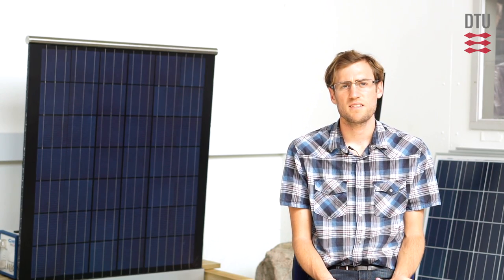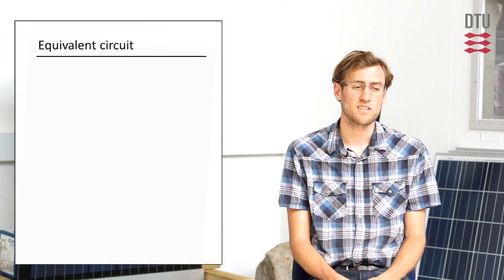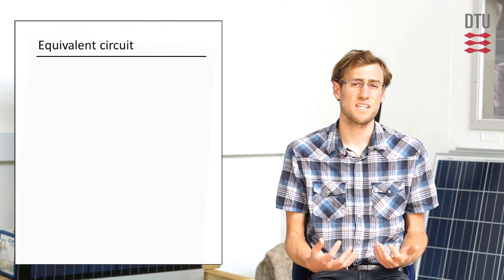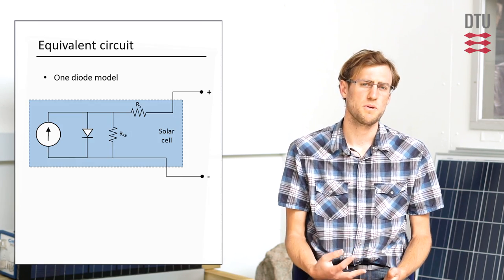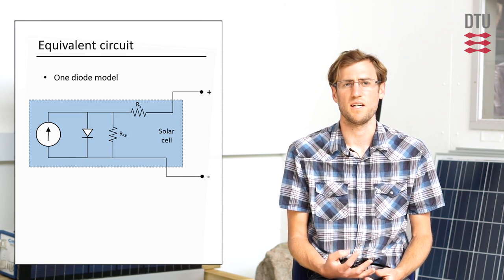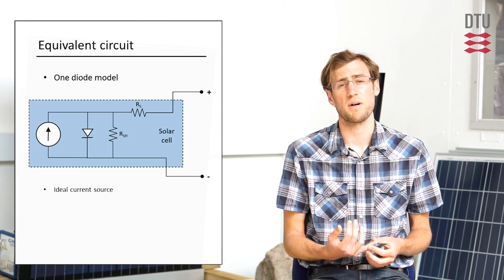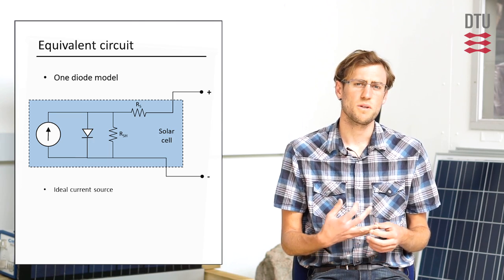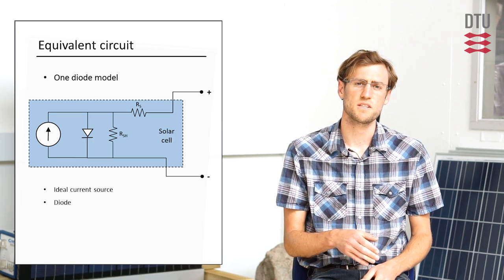So the performance of PV devices is oftentimes modeled with equivalent circuits. The most commonly used equivalent circuit in PV is the one diode model. So there's four components in the one diode model. There's an ideal current source, which is driven by light intensity. In parallel with that, we have a diode, which gives us the diode effect on the IV curve.